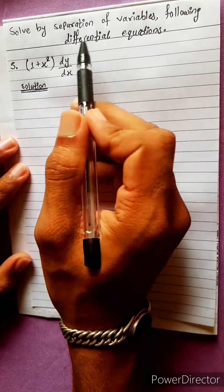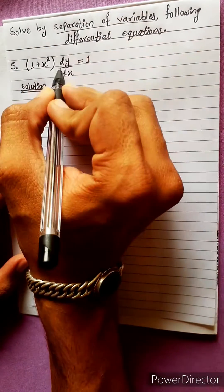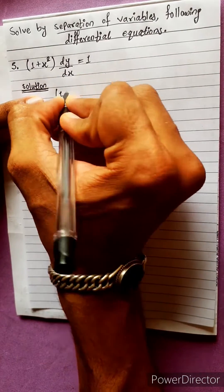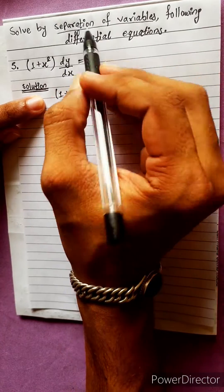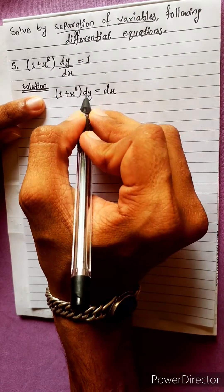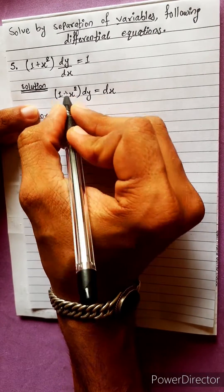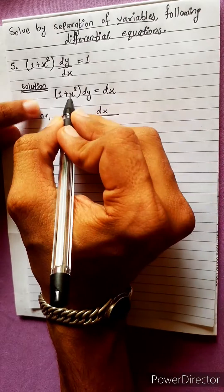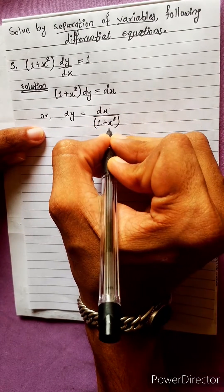Solve by separation of variables: (1 + x²) dy equals dx. We separate the variables — dy on one side and dx on the other. Dividing by (1 + x²), we get dy equals dx divided by (1 + x²).